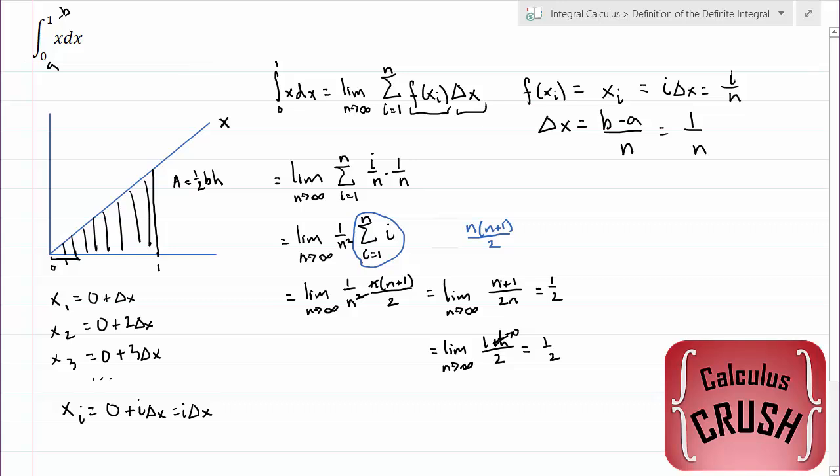Another way to say it is if you have equal powers on the top and bottom, then the limit is just a ratio of leading coefficients, 1 over 2. So there we have it, our final answer. The integral from 0 to 1 of x dx is equal to 1 half.